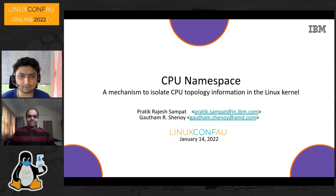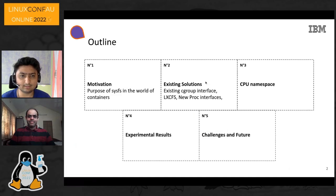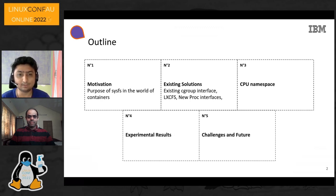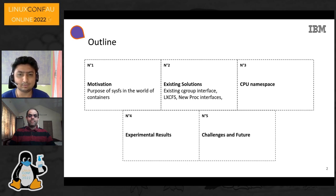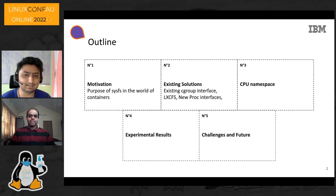The agenda for our talk is that we'll first highlight the question of what is the purpose of sys and proc in the world of containers, and are there any implications of exposing this information? Next, we'll talk about some existing solutions that help mitigate this problem. We then present our solution called the CPU Namespace, some experiments around it, and finally we post questions around the challenges that exist in this space.